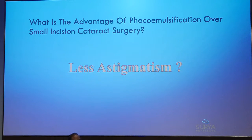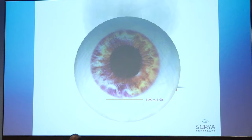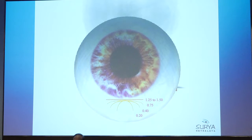Published literature shows FACO's biggest advantage over SICS is less induced astigmatism, but there are no studies on how SICS wound modification can lead to desirable astigmatism results. The principle is simple: a straight incision induces 1.25–1.5 diopters of astigmatism; a frowned incision — where the ends go away from the limbus — induces 0.75 diopters. The more curved the incision, the less astigmatism it induces, allowing titration against pre-existing astigmatism.